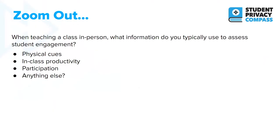We're going to take a moment to zoom out here and consider how, when you're teaching a class in person, what information do you typically use to assess student engagement? So this is when you're teaching in an actual classroom. Do you look at physical cues, in-class productivity, student participation? Is there anything else that you look at to consider a student's engagement during a class?